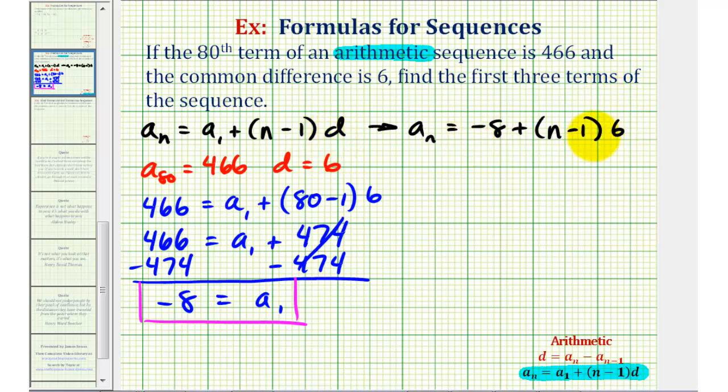Let's simplify this formula by clearing the parentheses. We'll distribute six here, so we'd have negative eight plus six n and then minus six. Negative eight minus six is negative fourteen, so we'll have a sub n equals six n minus fourteen.